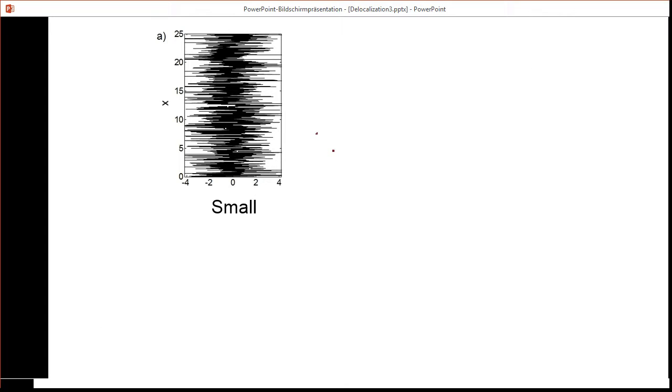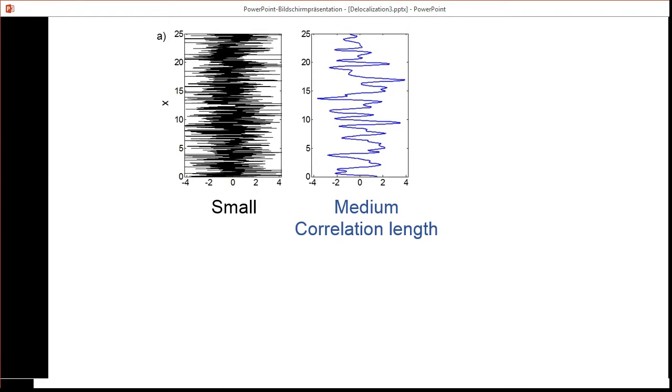This small correlation length looks something like the black trace here, or medium correlation lengths would look like this blue trace, while for large correlation lengths it would look like the red one.